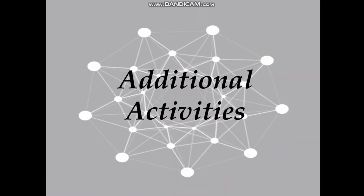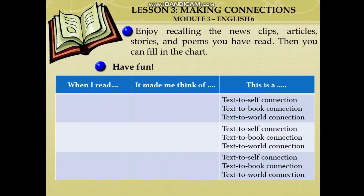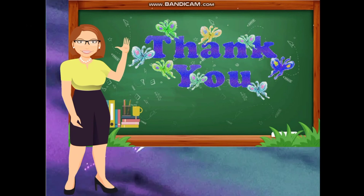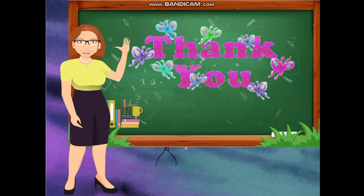Now, for your additional activities, enjoy recalling the news clips, articles, stories, and poems you have read. Then, you can fill in the chart. In the first column, you see 'When I Read.' In the second column, 'It Made Me Think Of.' And in the last column, you choose: text-to-self connection, text-to-text or text-to-book connection, and text-to-world connection. Have fun in making connections! Reminder: you are going to pass your answer notebook together with your modules. Thank you, students, for a job well done! See you!